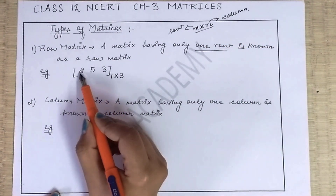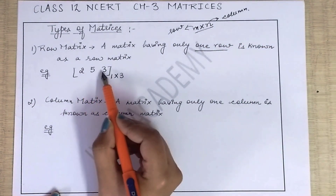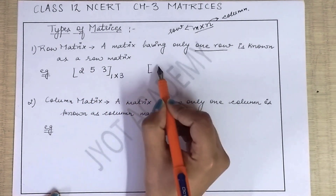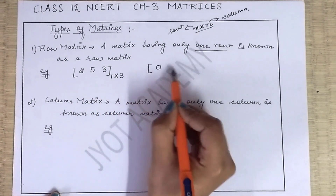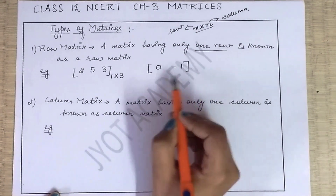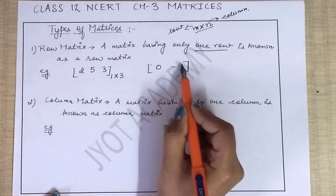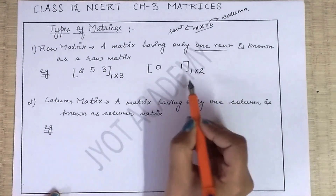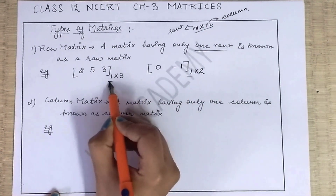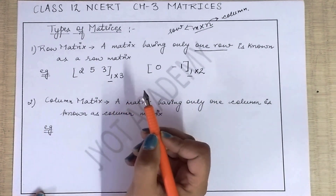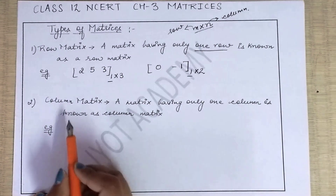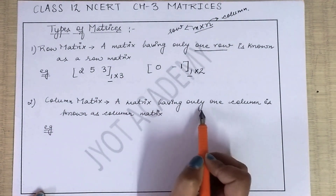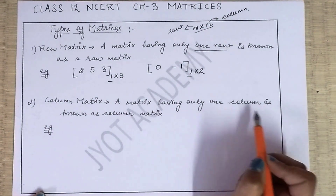Yahaan pere aapke paas only one row hai, chahe aapke jitne marzi columns ho sakti hain. Another example: [0, -1] — ismein sirf one row hai but we have two columns. So the order is 1×2. M ki jagah hamesha one hoga — yaise aap bolenge row matrix. Next dekhte hain column matrix.